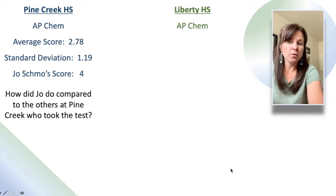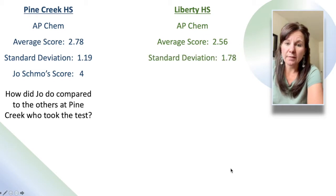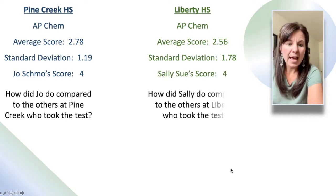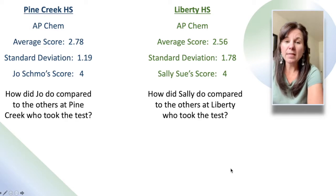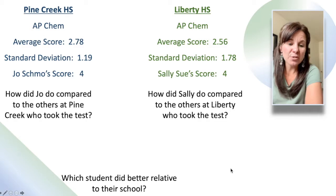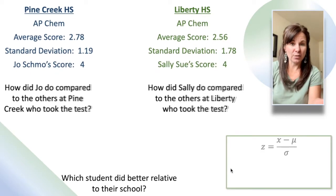Let's go over to Liberty High School where they also gave the AP Chemistry exam. The average there was 2.56 and the standard deviation at Liberty was 1.78. Sally Sue's score was also 4. How did Sally do compared to the others at Liberty who took the test? And we can actually combine these two questions to ask a third question: which student did better relative to the students at their school?